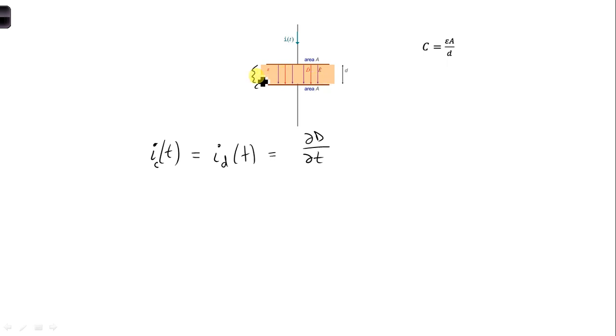So if we were to define a surface, we could pick any place here in between the two plates, let's just say halfway between the two plates. We could define a surface here, S, and we're going to take the surface normal to be downwards, meaning we're going to look at the flux or the displacement current going through this surface in the downward direction.